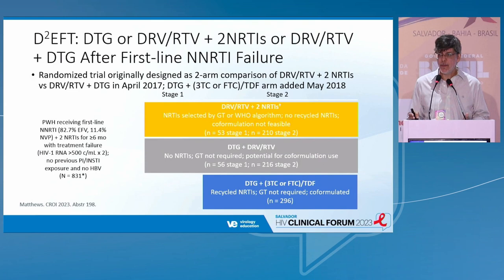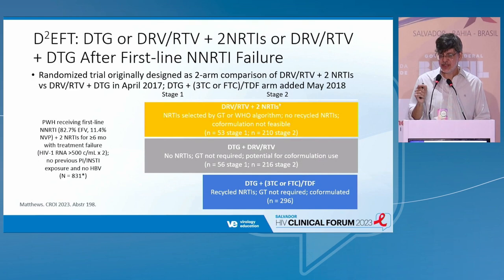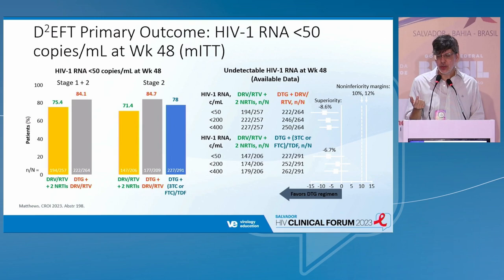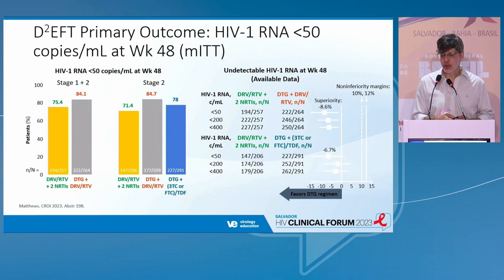This strategy was tested in the recently published D2EFT study. The idea was to compare darunavir plus two analogues versus darunavir-dolutegravir, in patients previously failing first-line and migrating to second-line. The study was expanded to a third arm of tenofovir, FTC, and dolutegravir. The study showed perhaps even superior efficacy in the dolutegravir-darunavir arm compared to the two-analogue arms, and no significant difference when compared to dolutegravir plus two analogues — even some suggestion of superiority.